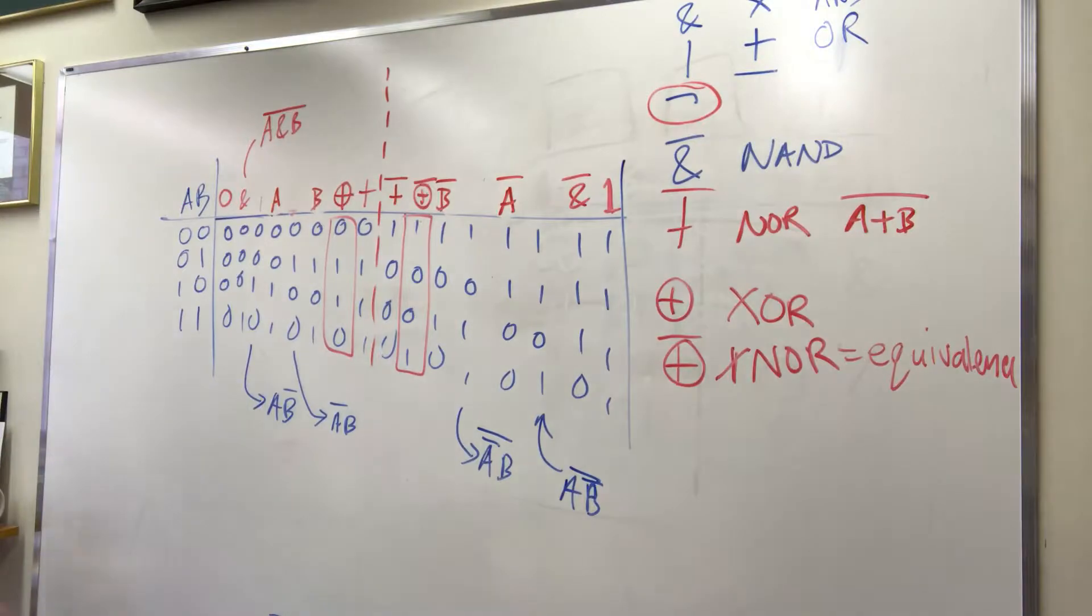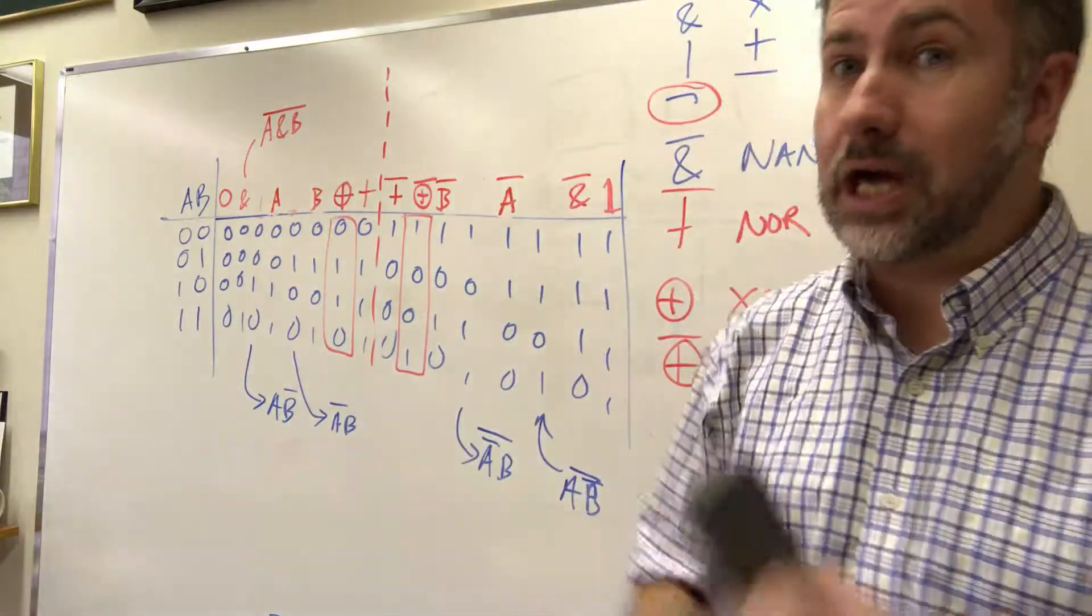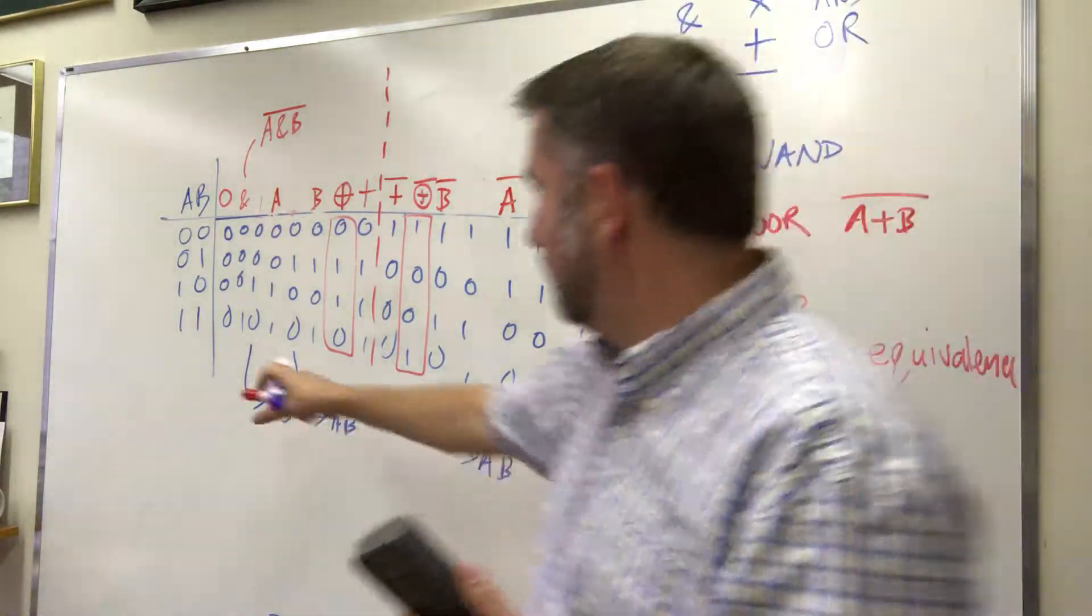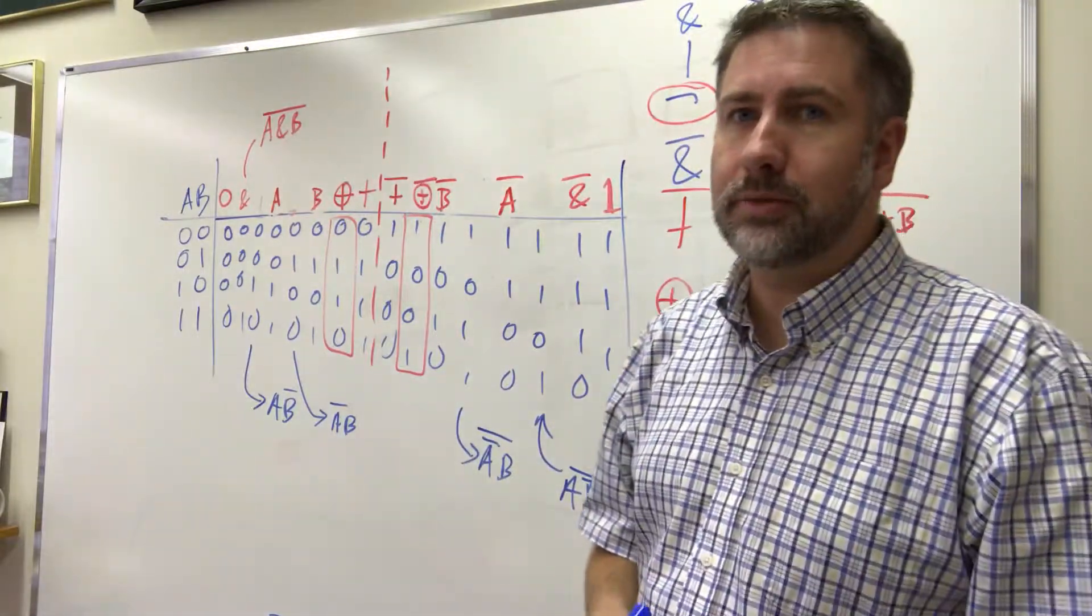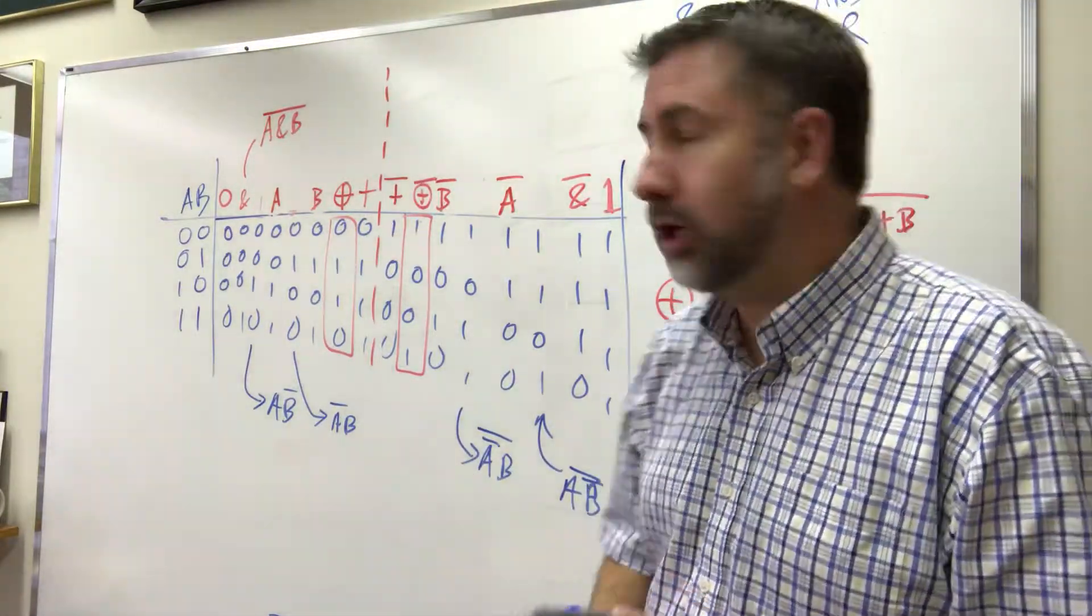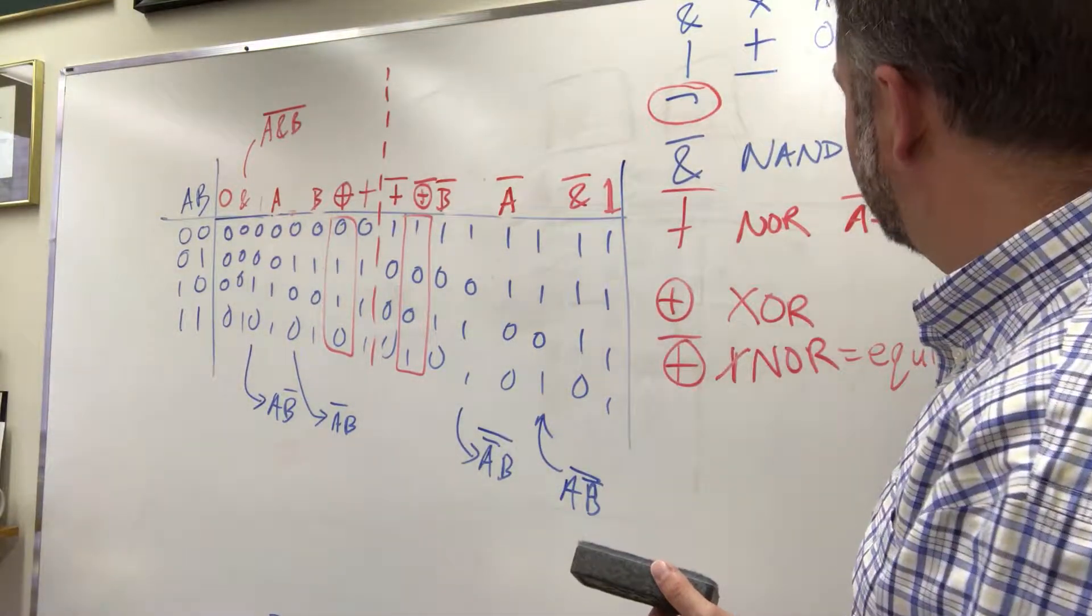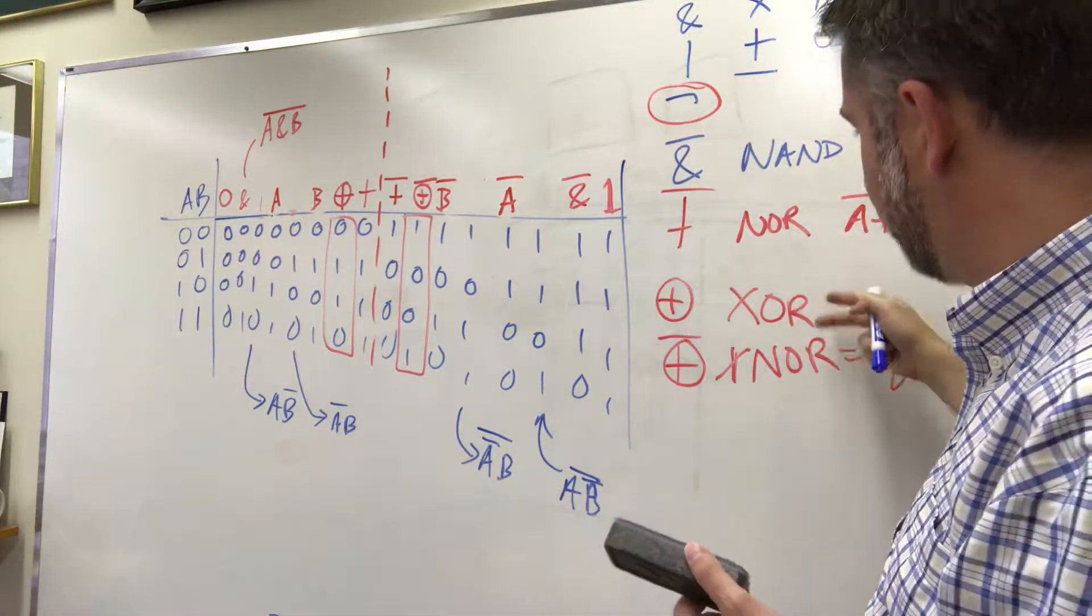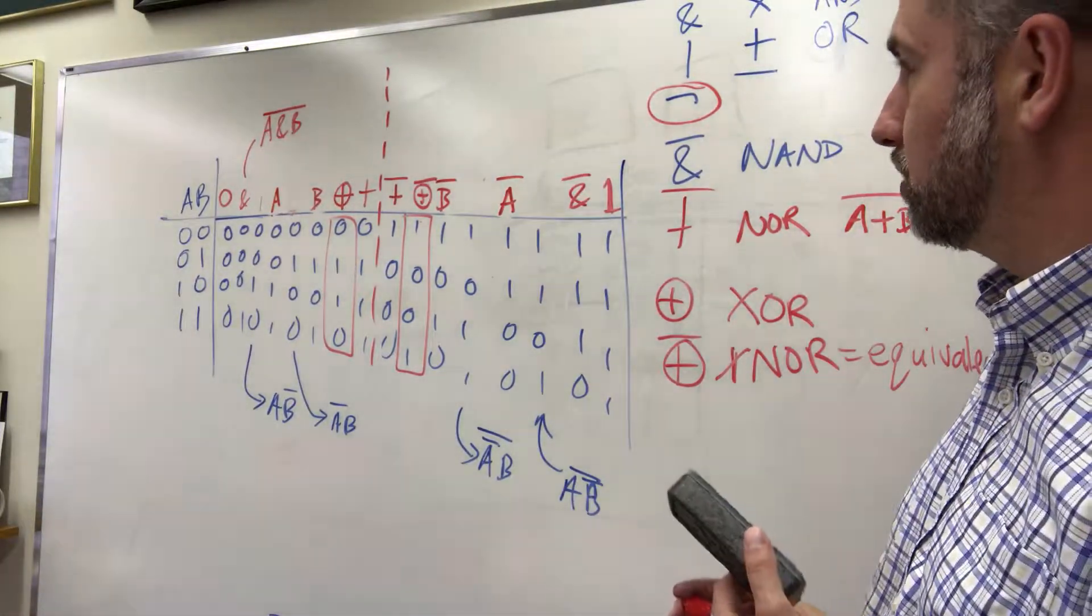So those are our 16 functions. These have special uses and special names later on. Often in logic we use these as our implication, where this means that a implies b. We don't really use implication in binary logic that much. Basically all we use are AND, OR, NOT, and then we can extend those with NAND and NOR, and then we have these special cases of exclusive OR and exclusive NOR, all of which we can use later on.